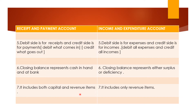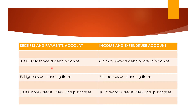The seventh point states that receipt and payment account includes both capital items and revenue items. When recording receipts, you will record all receipts whether capital or revenue. Similarly on the payment side, all capital payments and revenue payments are written. But in income and expenditure account — a very important point — you will be recording only revenue items. Capital items will not be taken into account; incomes will be only revenue income and expenditure will be only revenue expenditure.